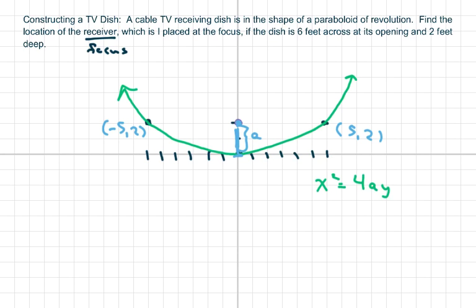So we plug in one of the points. We get 5² = 4a × 2, so 25 = 8a, and a = 25/8.